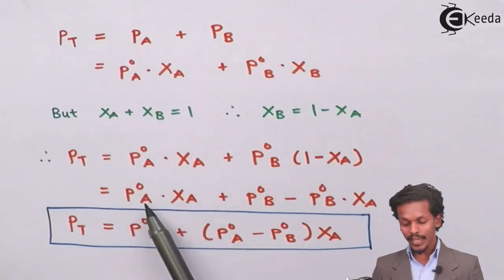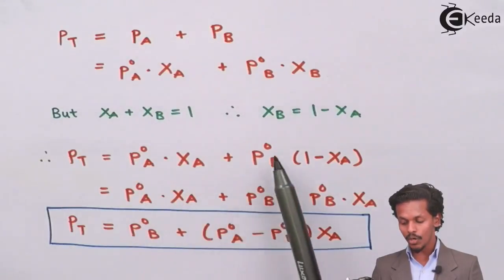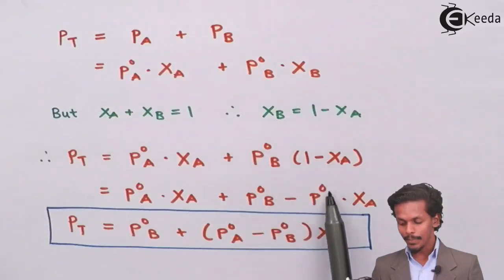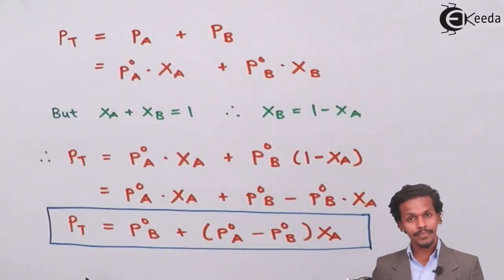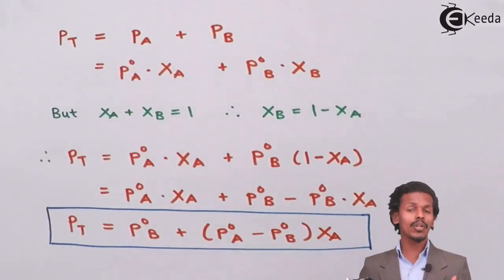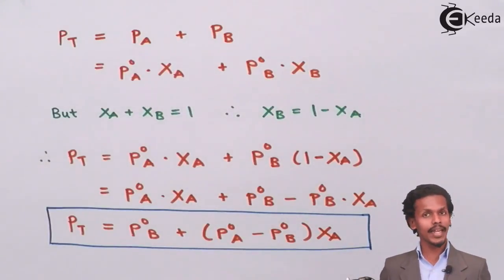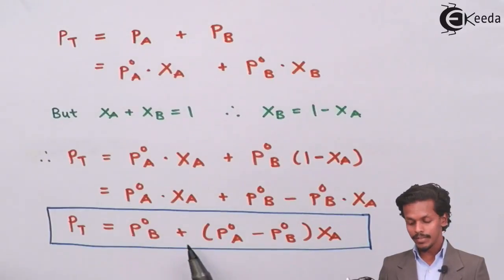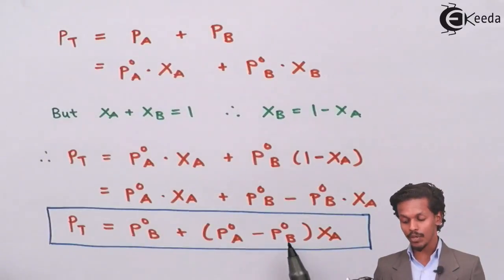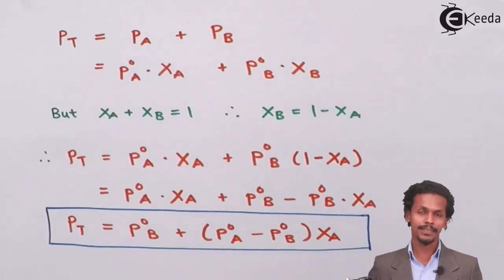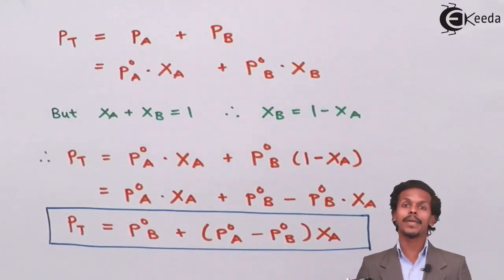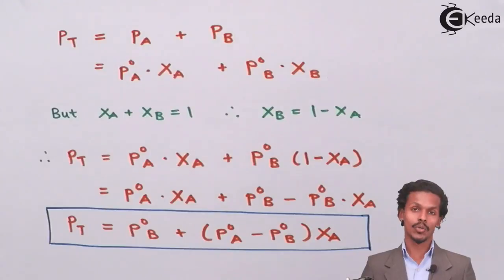Now P naught of A into X A plus P naught of B minus P naught of B into X A. Therefore, an expression we get is P T equals P naught of B plus (P naught of A minus P naught of B) into X A. This is an expression of vapor pressure according to Raoult's law.